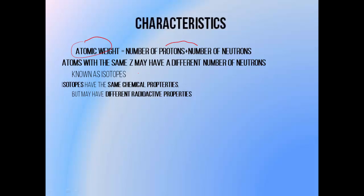Atoms with the same atomic number, but with a different number of neutrons, are known as isotopes, which generally have the same chemical properties, because having the same number of protons means they have the same number of electrons, generally in the same configuration. But they may have different radioactive properties. So the nucleus may be more or less stable, depending on the number of neutrons contained within.